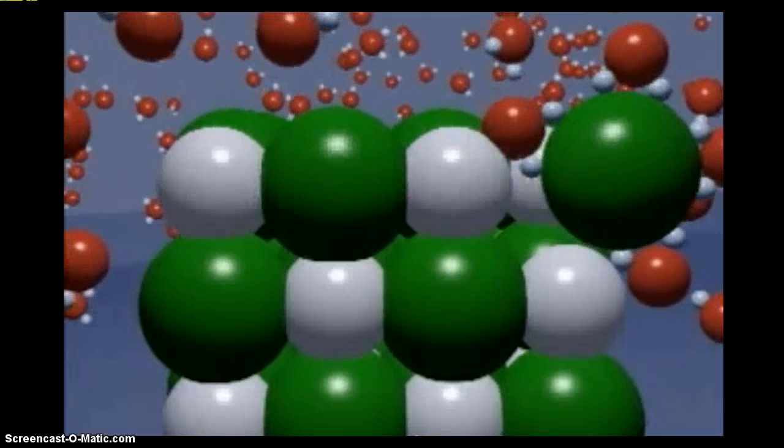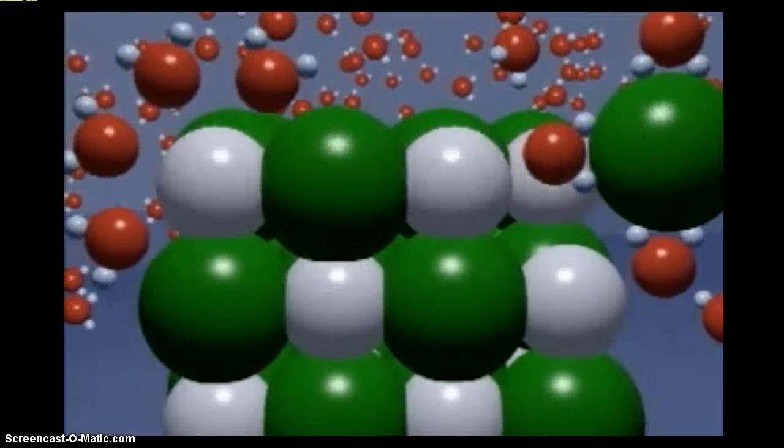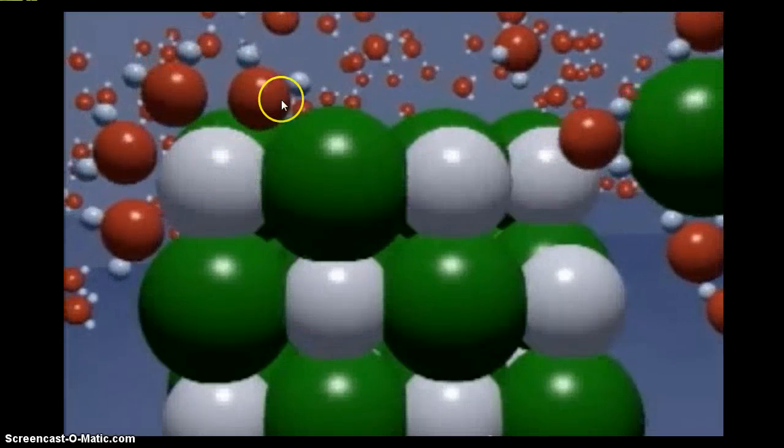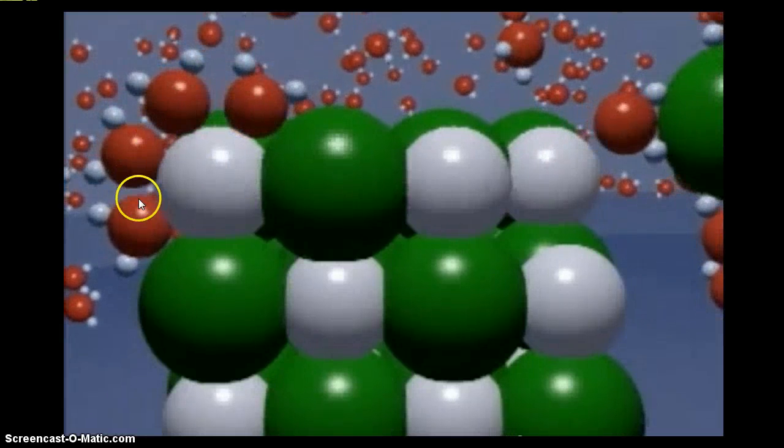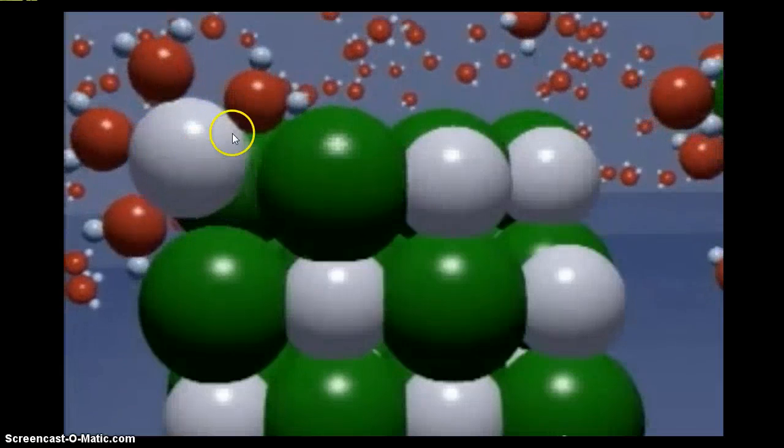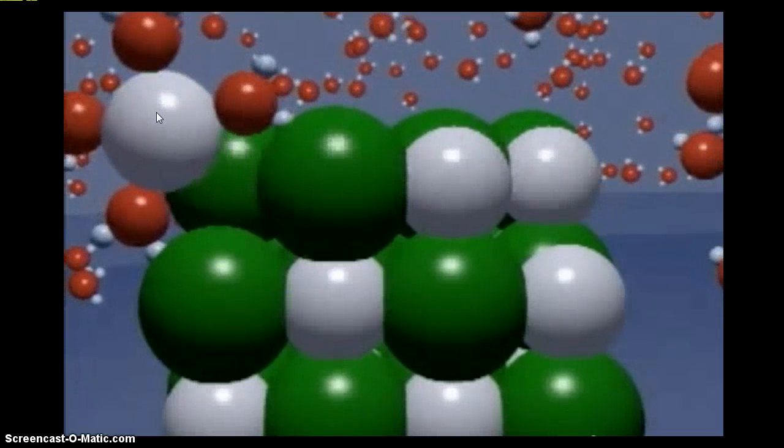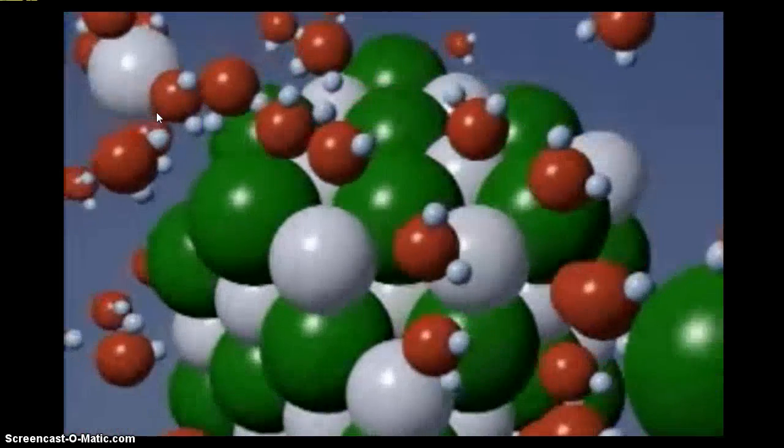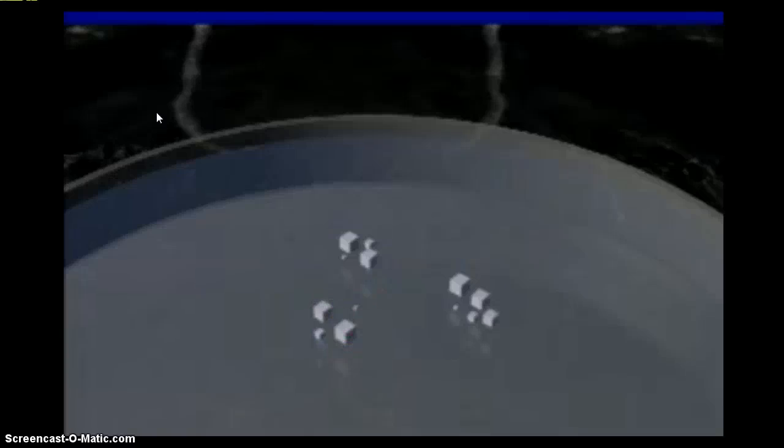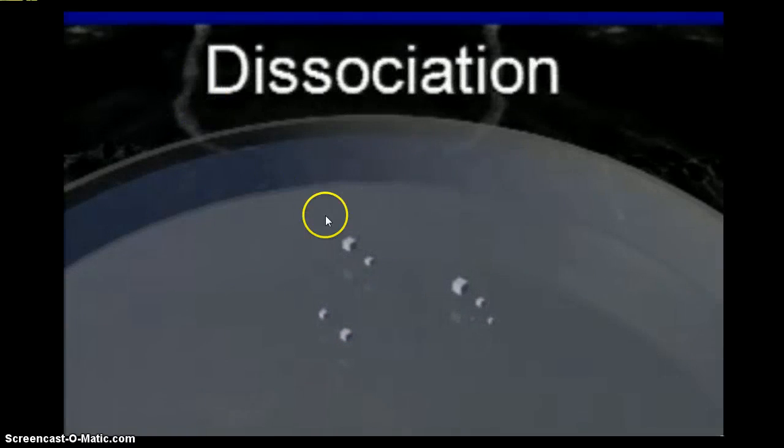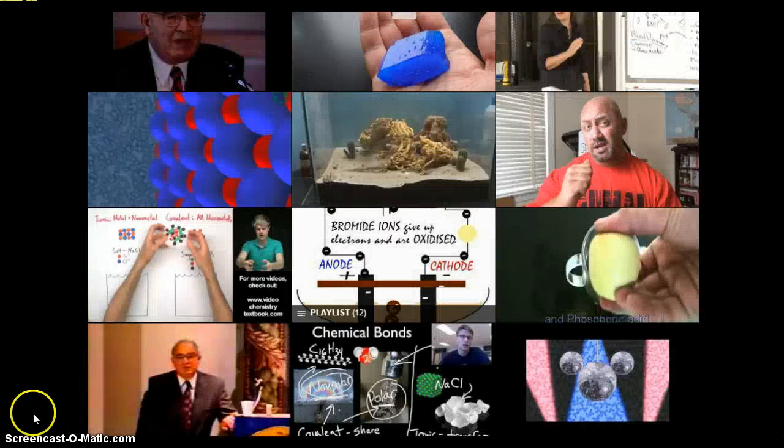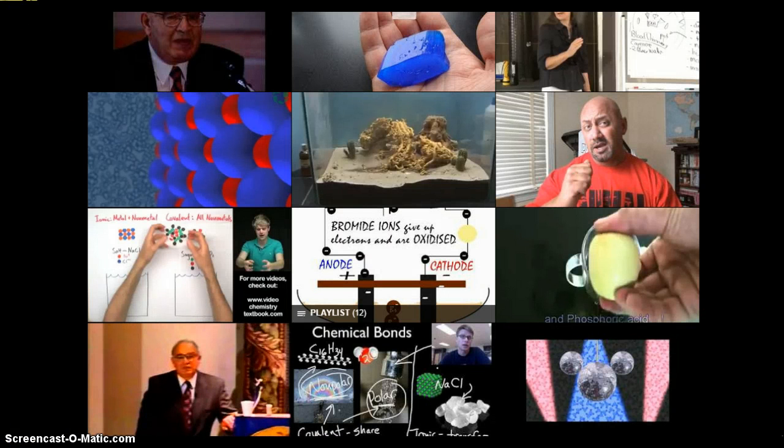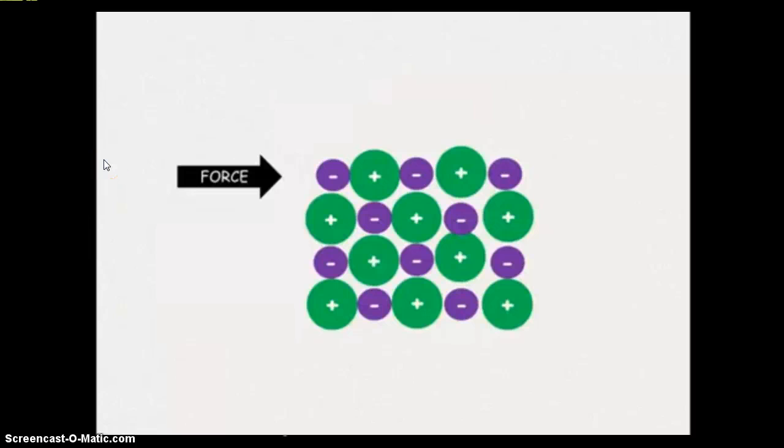The oxygen side attracts the sodium and pulls that away. It's pulling it because opposites are attracted together. This process continues until it looks like all the salt is disappearing. It's just separating them all out, and then you can't see it anymore. That's why salt, or most ionic compounds, are soluble in water.